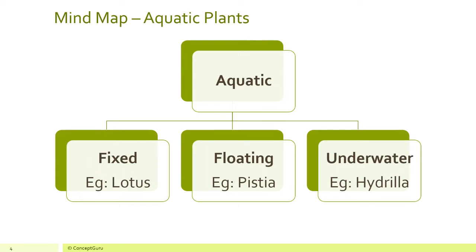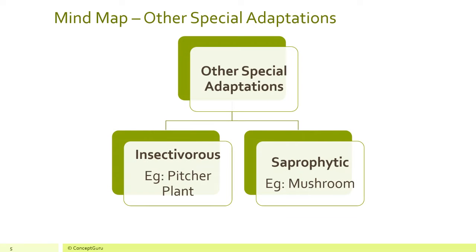For adaptations in aquatic plants, we have fixed aquatic plants like lotus, floating aquatic plants like Pistia, and underwater aquatic plants like hydrilla. The other special adaptations include insectivorous plants such as the pitcher plant, and saprophytic plants like the mushroom.